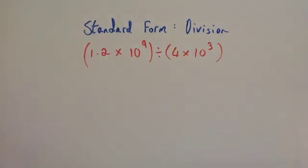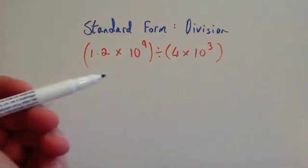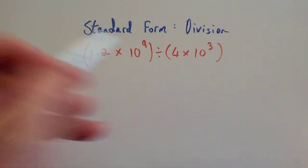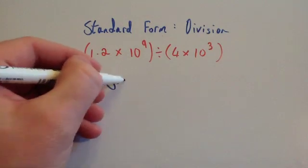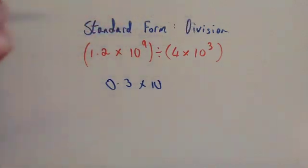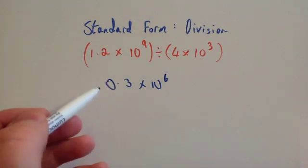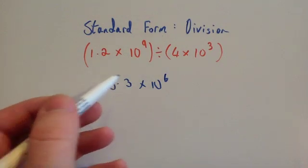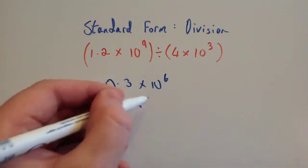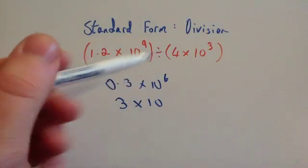Let's have a look at a slightly trickier one. This time we've got 1.2 multiplied by 10 to the 9 divided by 4 times 10 cubed. So again you do the division for the numbers at the front. So 1.2 divided by 4 is 0.3, times 10 to the power of — well 9 take away 3 is 6 — so times 10 to the 6. Now looking at this, this number here isn't between 1 and 10. So we need to multiply this number by 10, and we get 3 times 10. If we make this one 10 times bigger we need to make this one 10 times smaller, so this would be 10 to the power of 5.